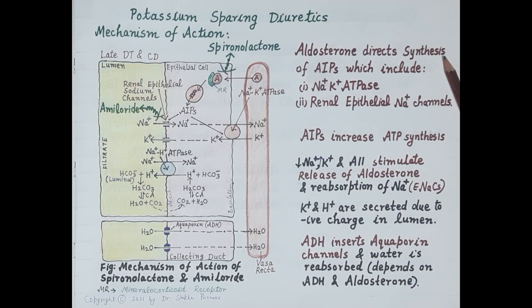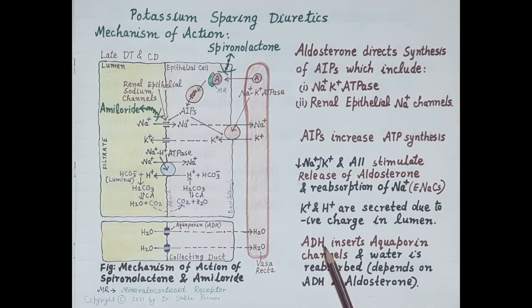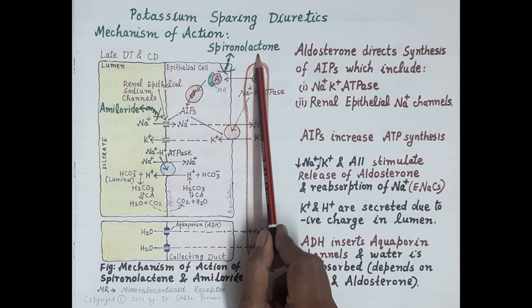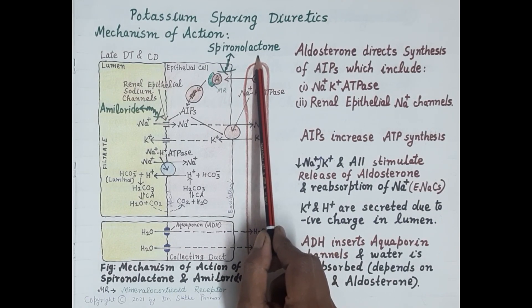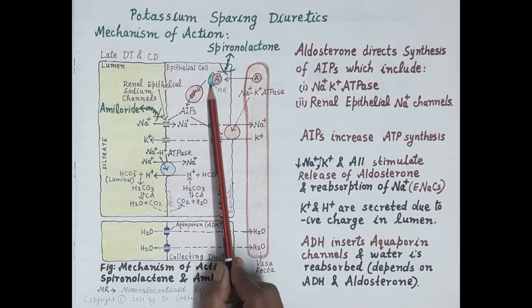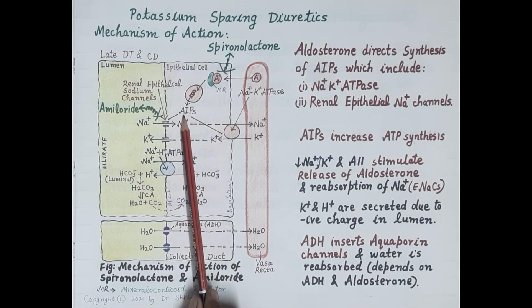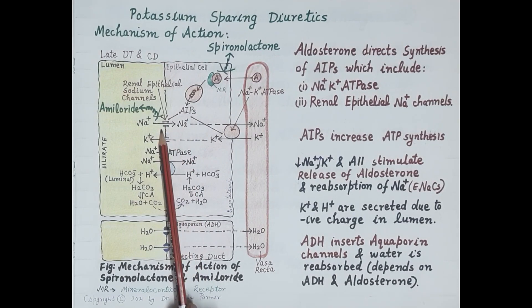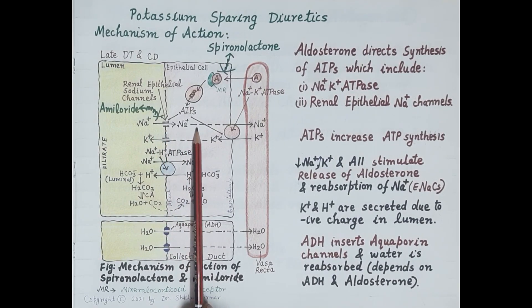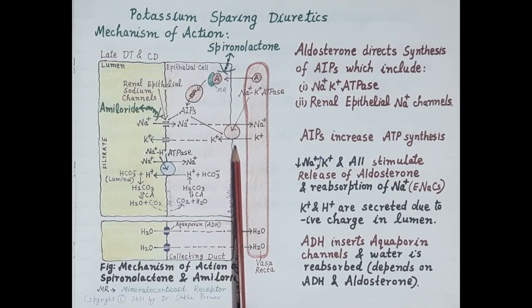Now let's understand the mechanism of action of aldosterone antagonist spironolactone. Spironolactone itself binds to the mineralocorticoid receptor, thereby inhibiting the binding of aldosterone to that receptor. This inhibits the formation of aldosterone-induced proteins. On one hand, spironolactone reduces synthesis of sodium channels so sodium is not reabsorbed from the filtrate into the epithelial cell; on the other hand, it also causes reduced synthesis of the sodium-potassium ATPase pump.